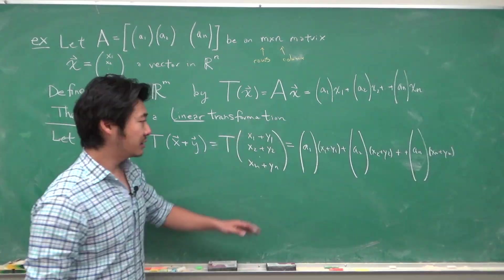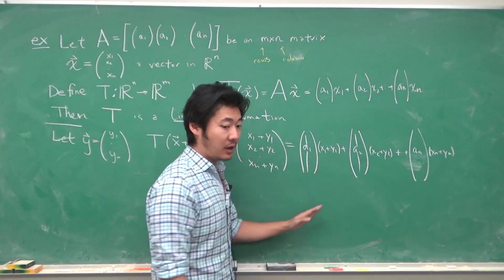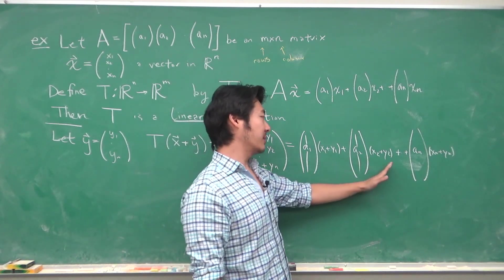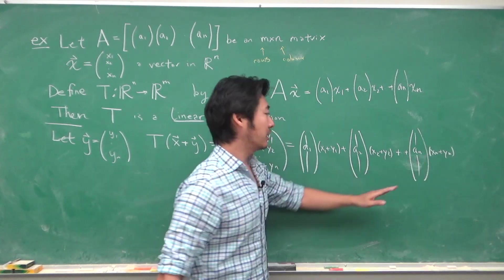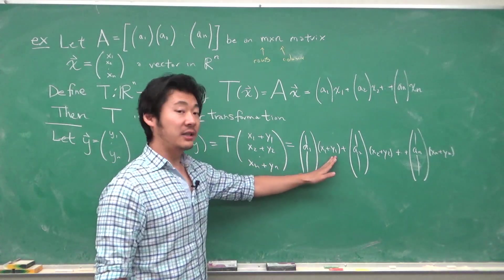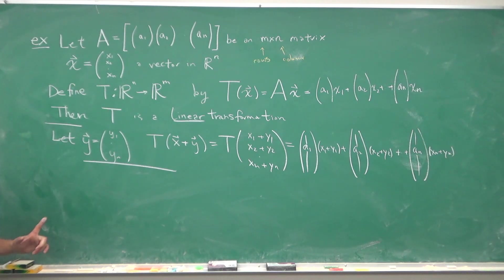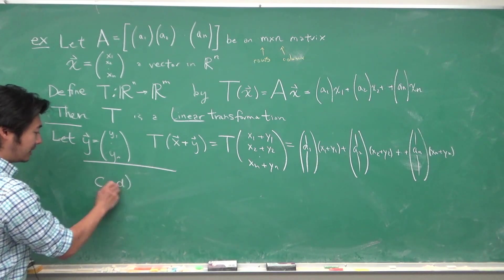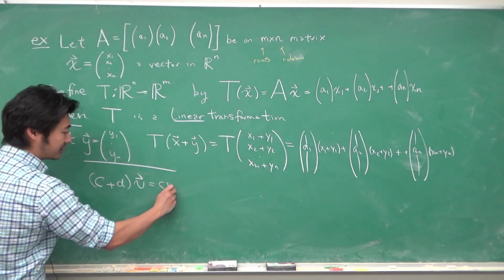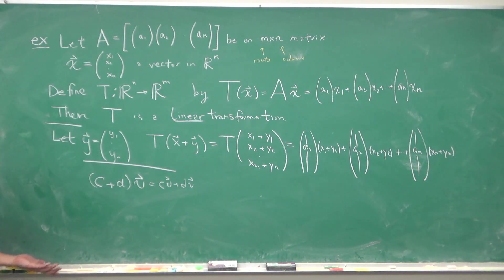And now according to our linear transformation, this will be a linear combination of the columns of A times these scalars as the weights. So the column a₁ times (x₁+y₁), column a₂ times (x₂+y₂), all the way to the column aₙ times (xₙ+yₙ). But these are just scalar multiplications. So in our property of vector addition, (c+d) times the vector v would be just c times v plus d times v.